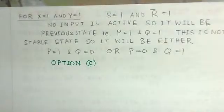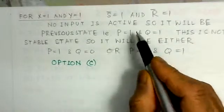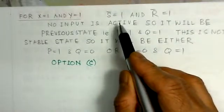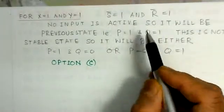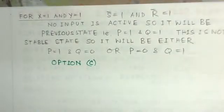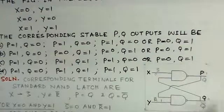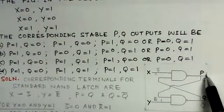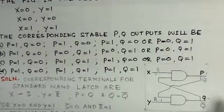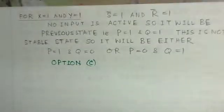The reason it is not a stable state is that Q and Q-bar are meant to be complements of each other. If one output is 1, the other has to be 0. Since both P and Q are 1 here, they are not complements, and therefore the state will not be a stable state.